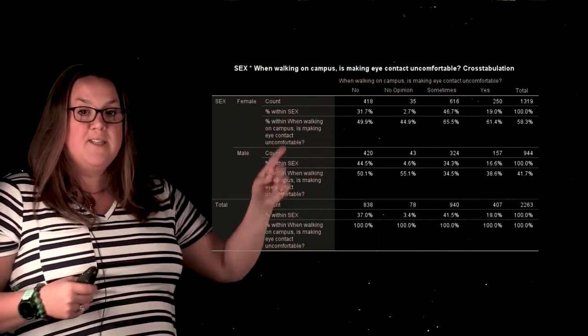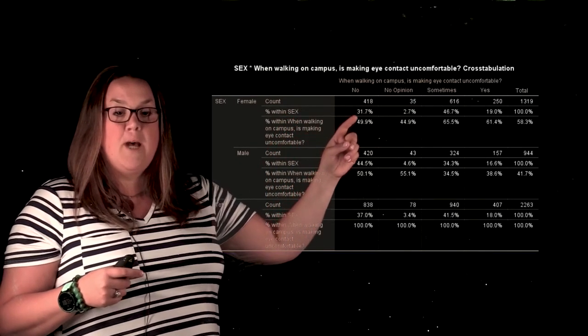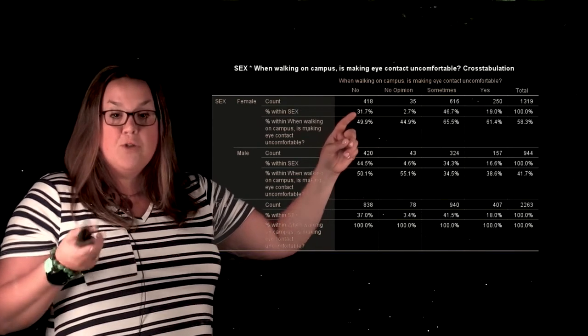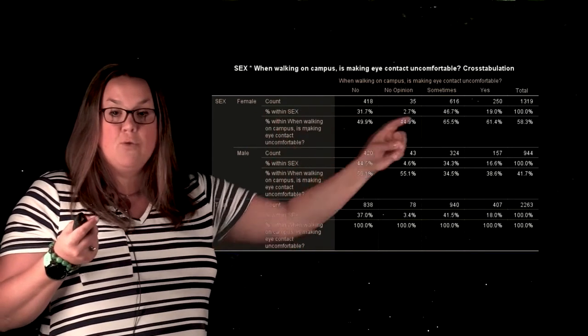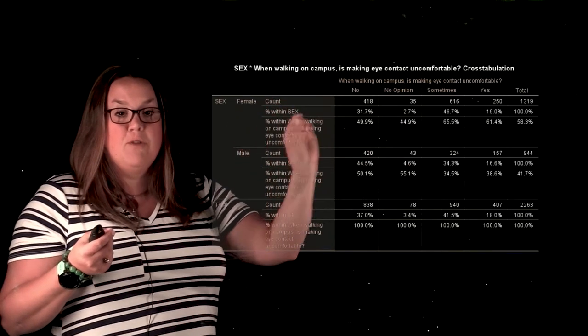The reason I'm showing you this is because the percent or the height of the bars is going to depend on the amount of individuals represented within that explanatory variable option. So here for females, if you look at percent within sex, all of those bar heights are going to be from this row right here.